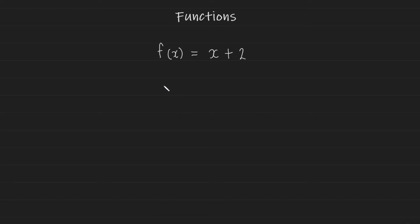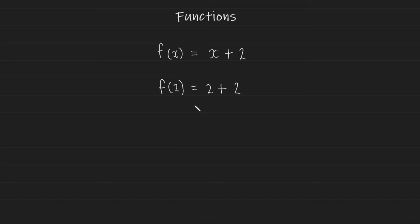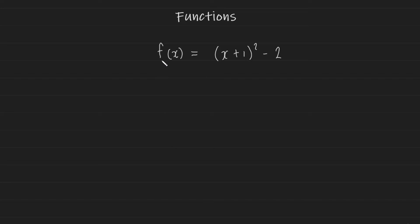Let's say I want to replace my x with a 2. The function now has an input of 2, the input replaces the x, and you add 2 onto it, leaving us with an output of 4. So f(2) is equal to 4. That's pretty straightforward for inputs and outputs.